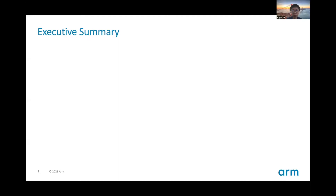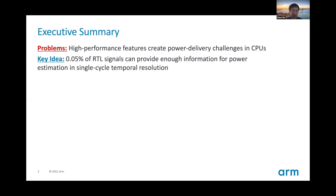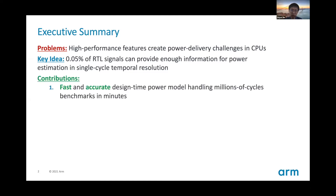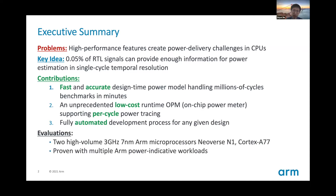I'll start with a high-level summary of this talk. The problems we tackle are power delivery challenges caused by high-performance features in modern CPUs. This work is based on a key idea that 0.05% of RTL signals can already provide enough information for power estimation. This work contributes a fast and accurate design-time power model and a low-cost runtime on-chip power meter, OPM. The development process is fully automated for any given design, and this work is evaluated on two Arm microprocessors named Neoverse N1 and Cortex A77, both of which are shipping in high volume.